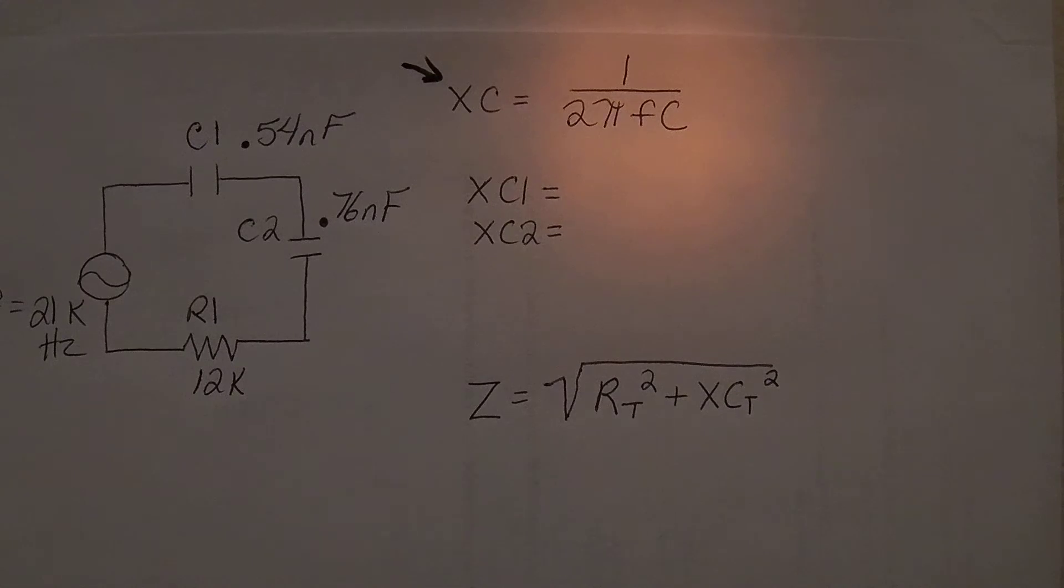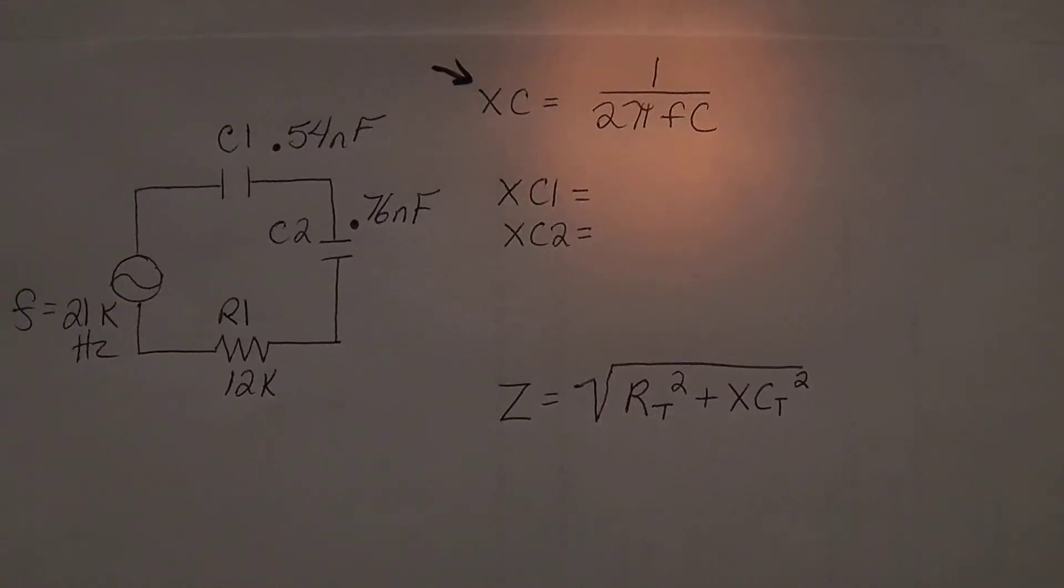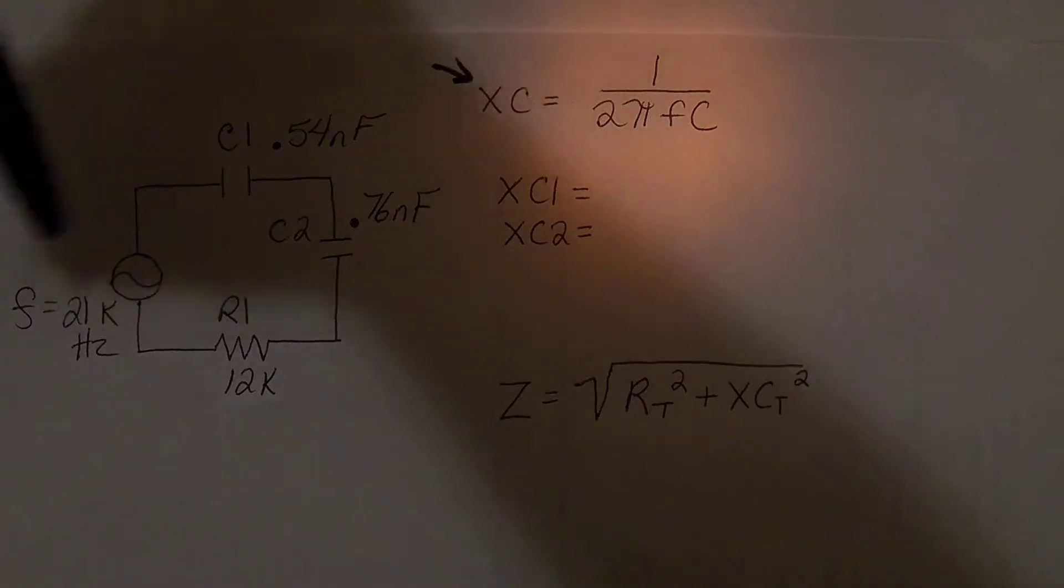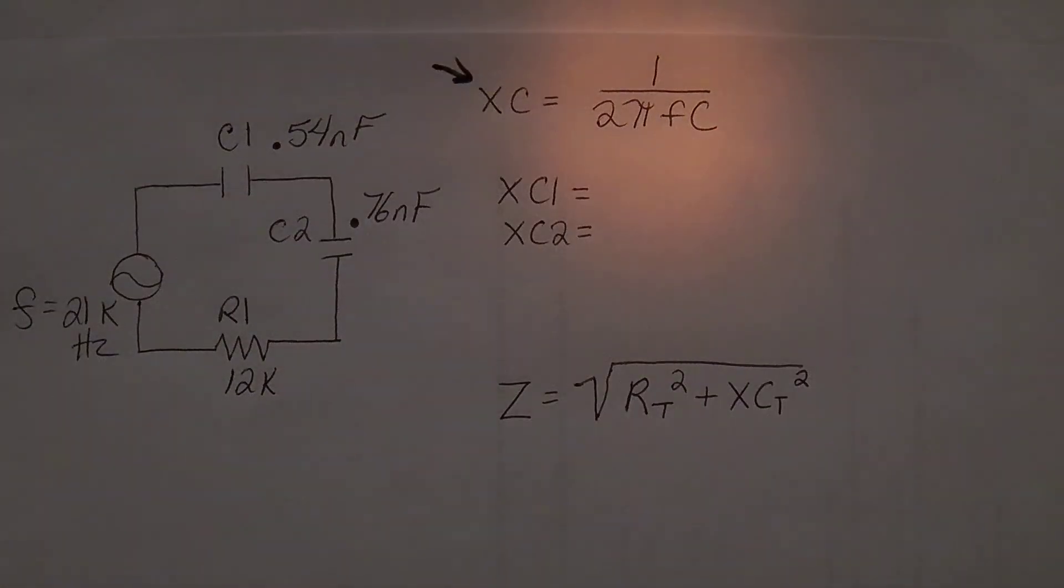So you will start with either 2π or 6.28, whichever you like best, and you will put that in and times it by frequency. So we can see here that frequency is 21 kilohertz. So we'll put 21 shift and then hit our 6 which is where our K is at, and then we will times it by the actual value of the capacitance.